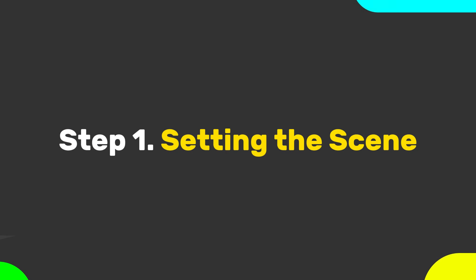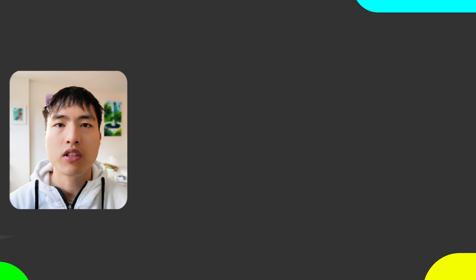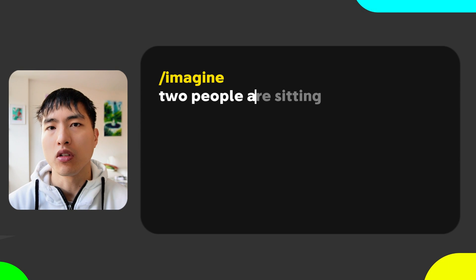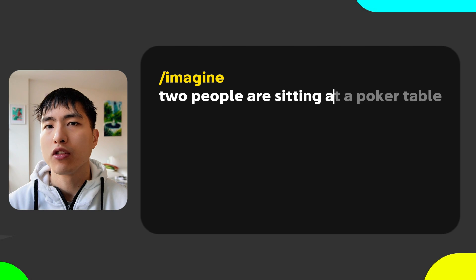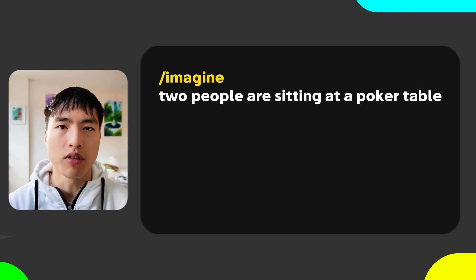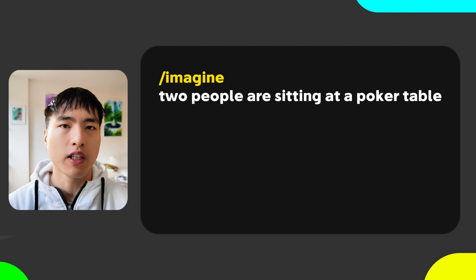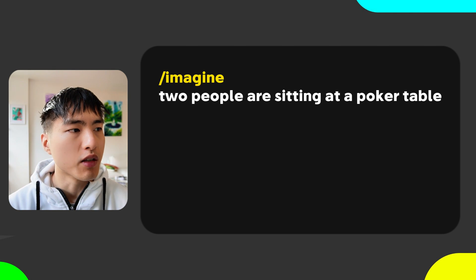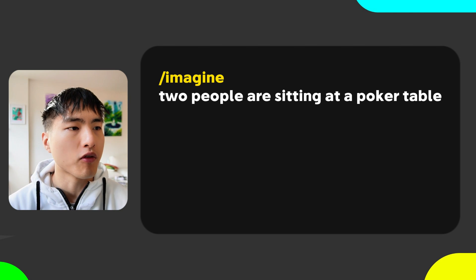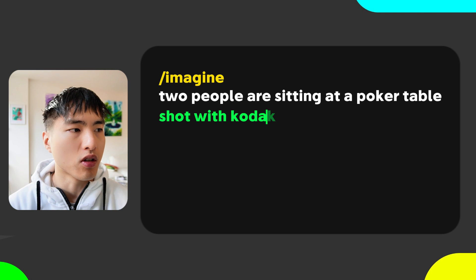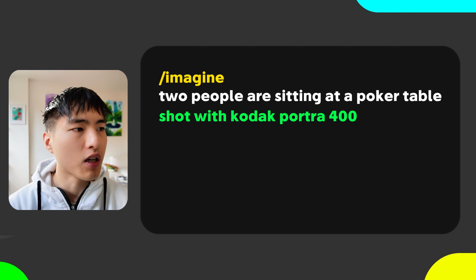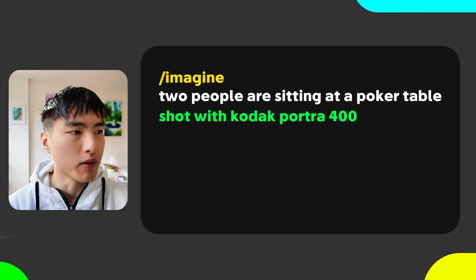Step 1 is setting the scene. We can start with a basic idea of what we're looking for, like two people sitting at a poker table. That's simple enough — don't be too specific at this point. We just need a general idea with as few details as possible. It's also helpful to introduce a medium for the image. I want a photo, so I'll add 'shot with Kodak Portra 400 film.'